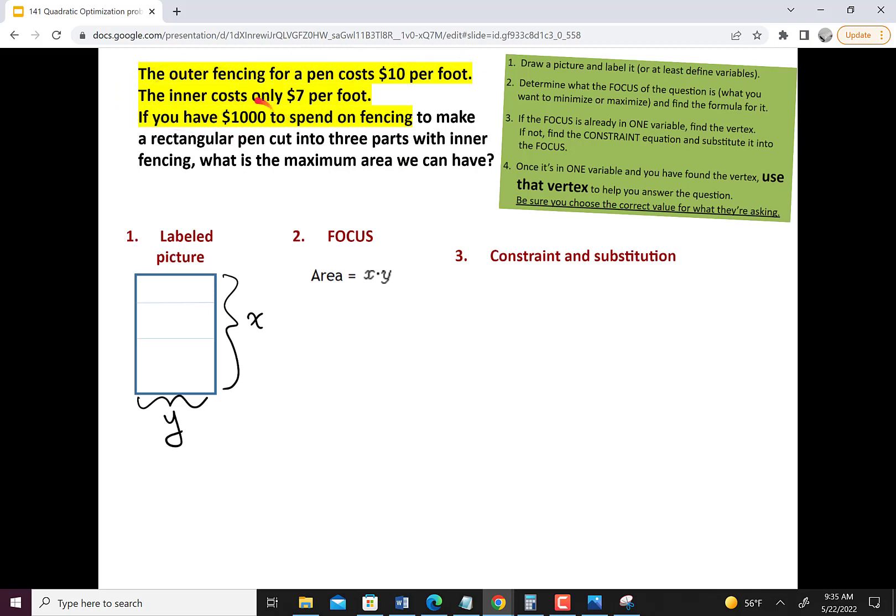Now we pay attention to that money. We have $1,000 to spend. And the outside of the fencing costs $10 per foot. These little inside pieces cost $7 per foot, and so we need to figure out what equation that implies.